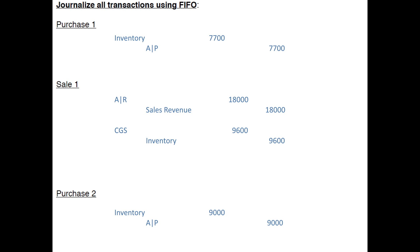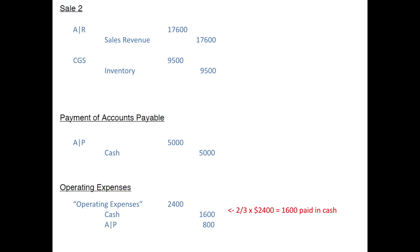The next transaction is purchase number two: we debit Inventory for $9,000 and credit Accounts Payable for $9,000. Sale number two looks similar to sale one — there are two entries. We debit Accounts Receivable for $17,600 and credit Sales Revenue for $17,600. Then we record the cost: debit Cost of Goods Sold and credit Inventory for $9,500.